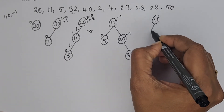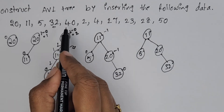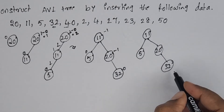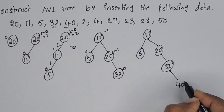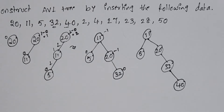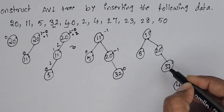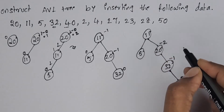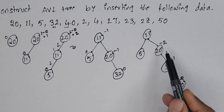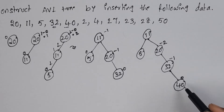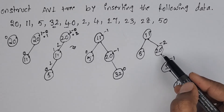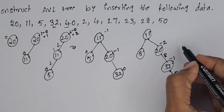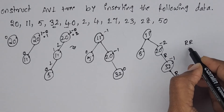Now insert one more element: 40. Since 40 is greater than 11, greater than 20, and greater than 32, we insert 40 to the right of 32. The balance factors become: 40 is 0, 32 is -1, 20 is -1, 5 is 0, and 11 becomes -2. Node 11 is unbalanced because of adding 40. Since we added on the right-right side, we must perform RR rotation.